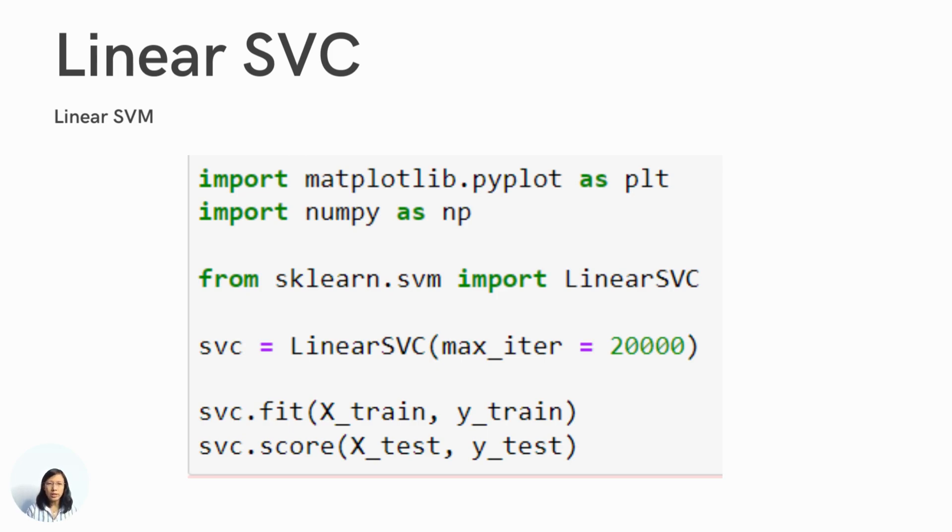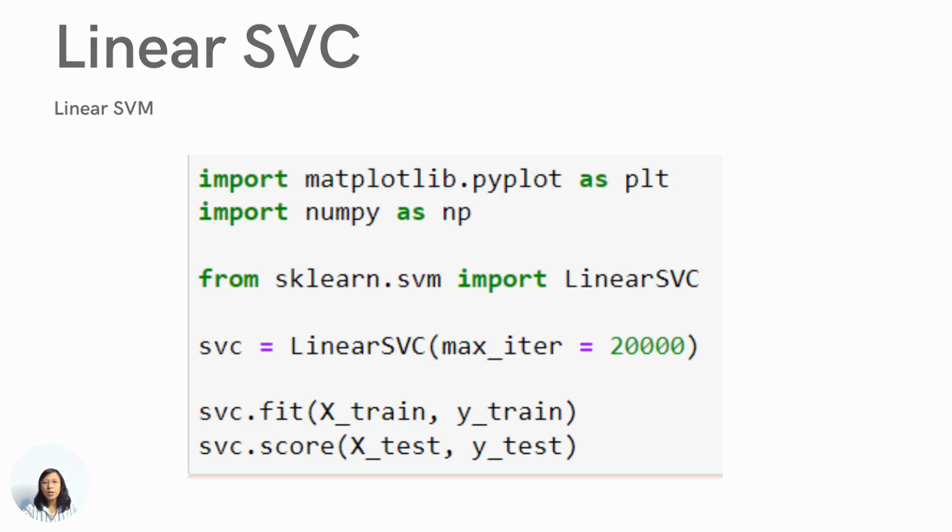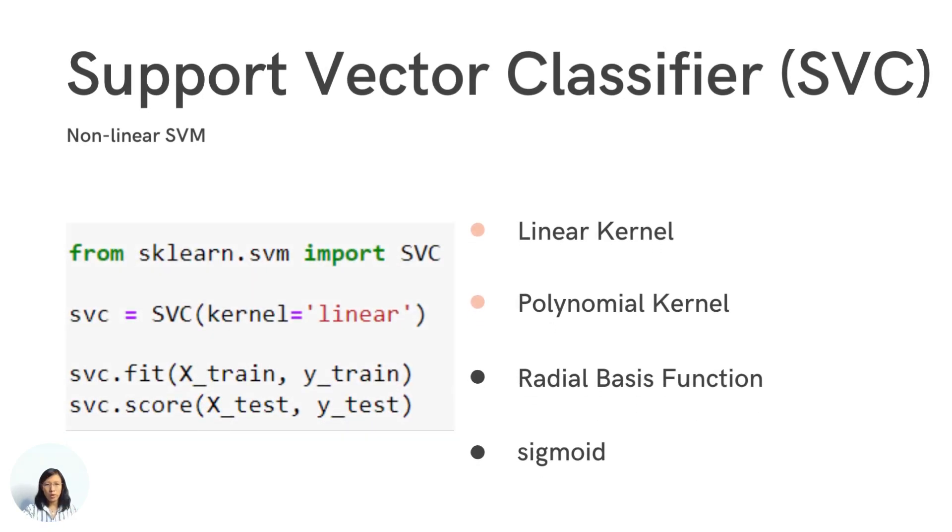This linear SVC works for linearly separable data. For non-linear data, how can we solve it? We have another method called SVC, support vector classifier. This SVC is workable for both linear and non-linear by setting the kernel values. So if you set the kernel to be linear, this works pretty quite similar to the linear SVC. The only thing different is the implementation. So if the data is not linearly separable, we can use other kernels like polynomial kernels, radial basis function, or sigmoid function.